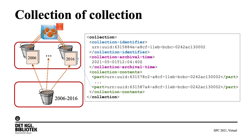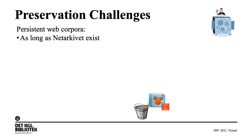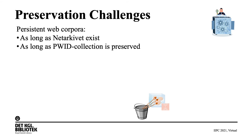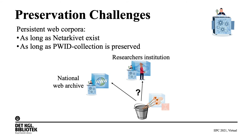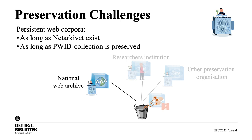The preservation of the PUD lists is of course not just done by generating the lists — we need to ensure long-term preservation of the results. The results will only make sense as long as the NetArchivet exists, and as long as we preserve the PUD collections. The question of where to preserve them — whether as part of the National Web Archive, at the institution of the researchers, or at a third preservation organization — involves different political and legal issues. For the time being, the results are queued up to be preserved as part of NetArchivet until final decisions are made.